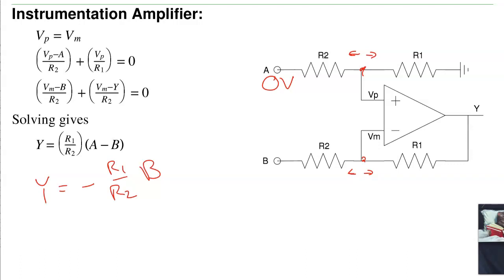Now let B be 0. In that case, if this is 0 and this is A, by voltage division, this is R1 over R1 plus R2 times A. That's the voltage here. Let's call that X. So we know X is equal to R1 over R1 plus R2 times A.